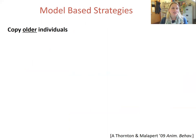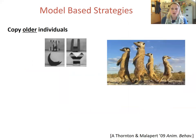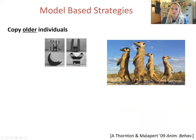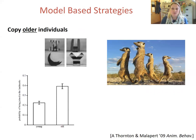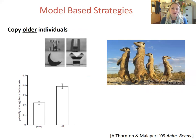There are lots of different types of model-based biases. The first example is a bias to copy individuals who are older than yourself. Alex Thornton and his colleague Malapert established arbitrary traditions in wild meerkats by training demonstrators to forage at novel landmarks — feeding next to different types of objects. They introduced these individuals and the landmarks to meerkat groups and observed the spread of the foraging behaviour. They found that naive individuals were more likely to join older rather than younger individuals foraging at the novel landmarks, likely due to the superior foraging experience of older individuals.